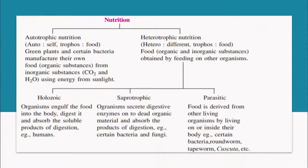Nutrition can be of two types: autotrophic and heterotrophic. Autotrophic means self-feeding — 'auto' means self and 'troph' means food. All the green plants and certain bacteria manufacture their own food with the help of inorganic substances, carbon dioxide, water and sunlight. Green plants contain a pigment that captures sunlight and converts carbon dioxide and water into glucose.